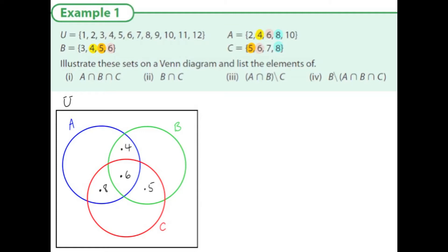Five is in B and C. Left over in A is two and ten. We have three left over in B. On its own in C we have seven. In the universe but not yet included in the circles A, B, and C, we have elements one, nine, eleven, and twelve, so they go outside the circles.